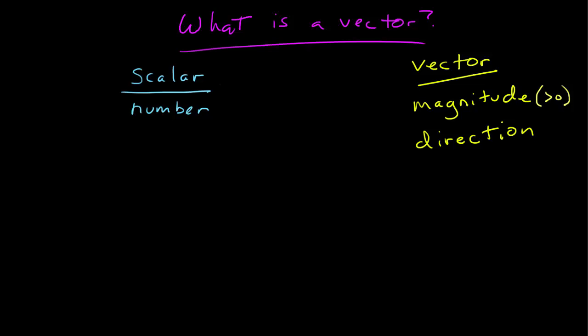This is the first video to introduce someone to a vector. What is a vector? We say a vector is something that requires for its description a magnitude and a direction for the purposes of this course. So we first contrast that to a scalar, which is just a number.